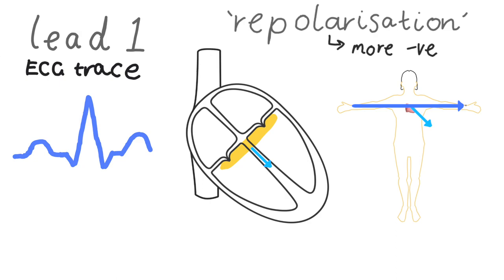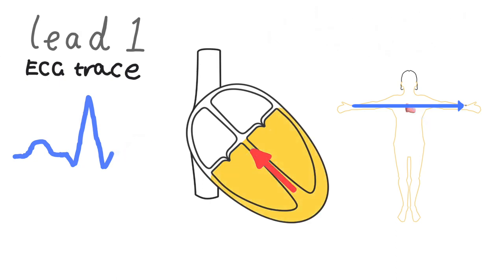So even though the wave of repolarization moves in this direction, because we're thinking of this as the spread of negative current, it'll be registered like this on the ECG trace. So this negative current I have here is a blue rather than a red arrow and as a result, we'll see a positive deflection in the ECG.